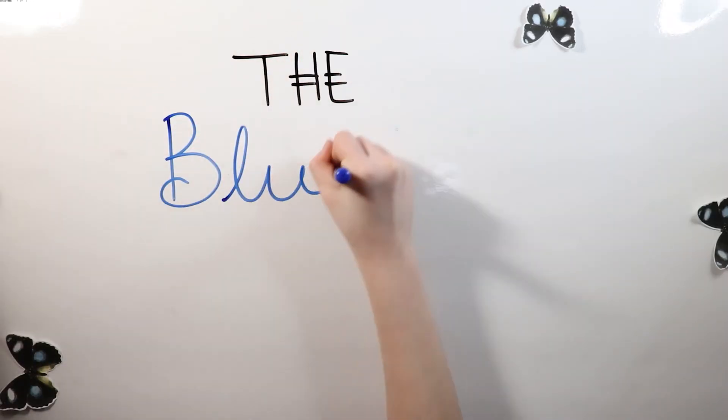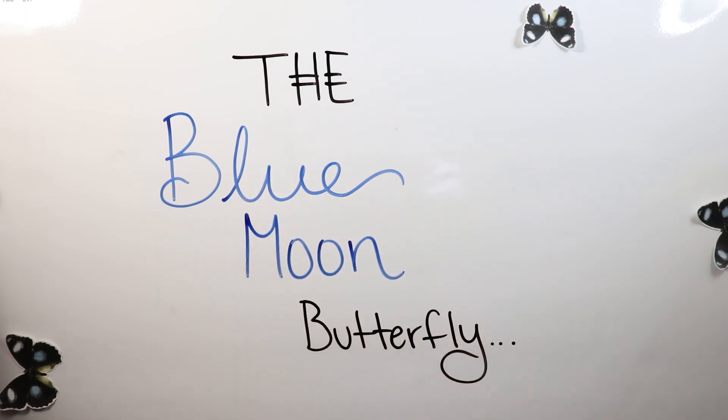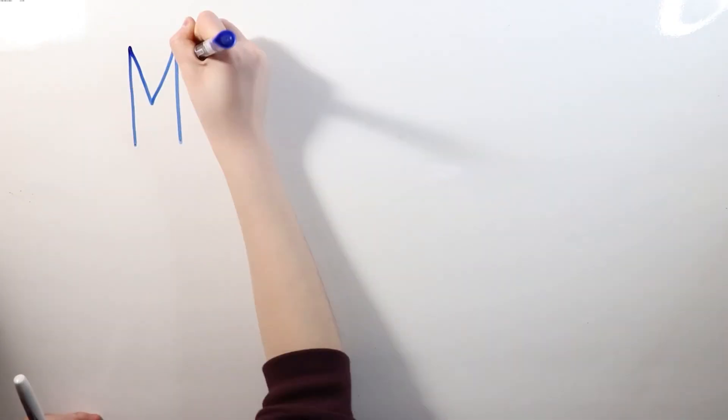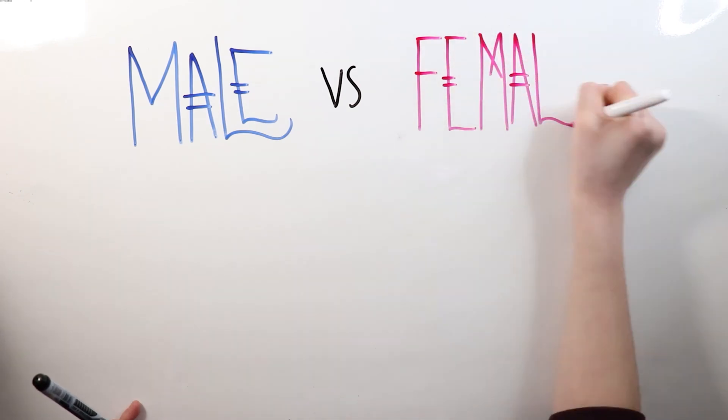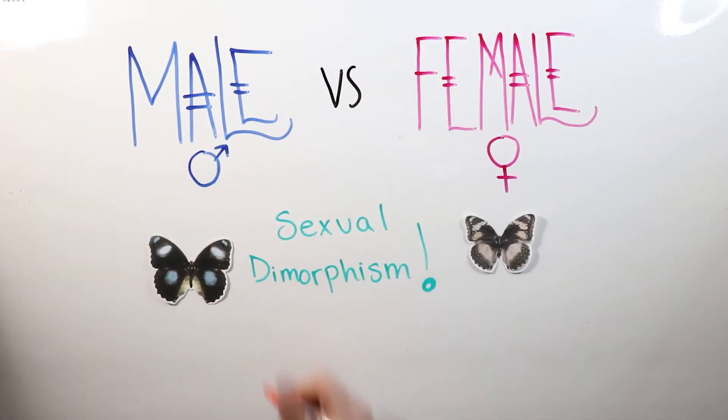The Hypolyminous bollina, or the blue moon butterfly for most people, is known for its magnificent moon-like patterning due to something called sexual dimorphism.